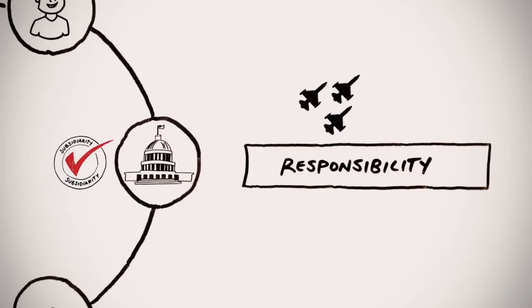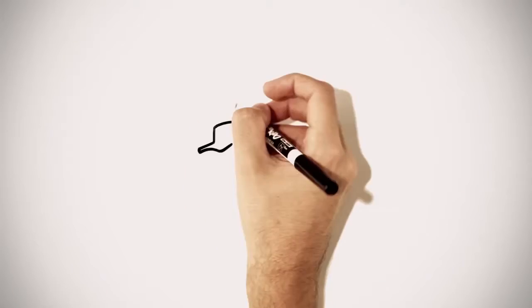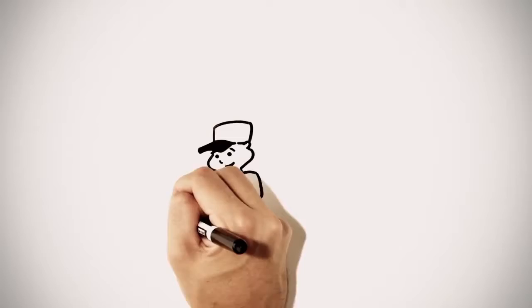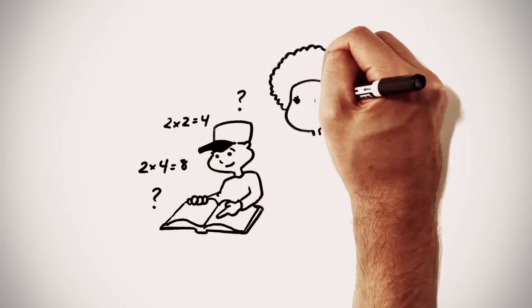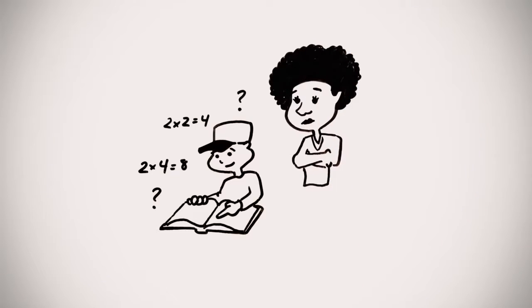Let me give you an example of what subsidiarity looks like in a family setting. Ten-year-old Manny is responsible for doing his math homework every night. But sometimes he encounters a really tough problem, and he needs his mom to step in and help.